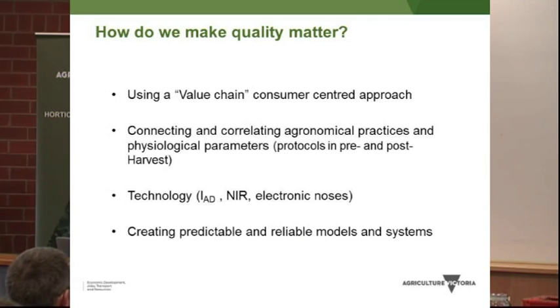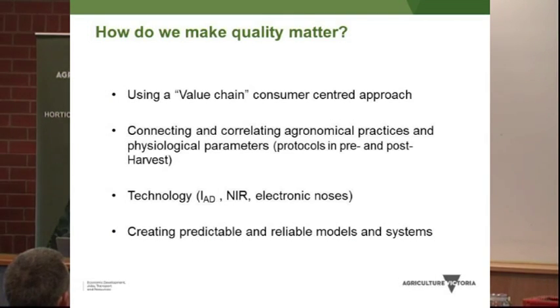Because the value obtained with this machine is attached to each fruit, we can backtrack along the entire chain. Knowing the behaviors of the various fruit, we can understand when and at which value the fruit should be harvested. So how do we make quality matter — or more than matter — how do we make quality profitable? To me personally, it really comes down to looking at this value chain concept centered on a consumer approach, and the DA or IAD technology is a good indicator to use in this approach.